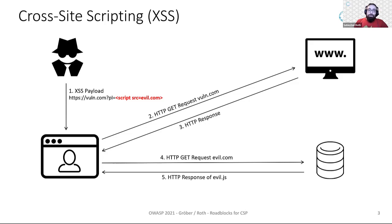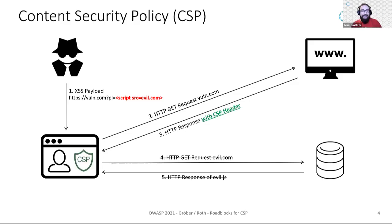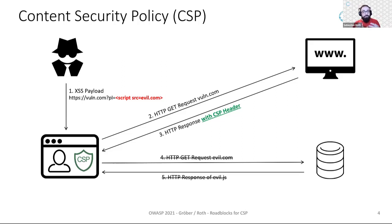That's where CSP kicks in to mitigate the effect of those markup injections. It basically acts as a last line of defense against those attacks. It is essentially a list of trusted JavaScript sources that are allowed to be loaded and executed by the browser. As soon as the server has a correct CSP header in the response, the evil script is not even requested by the victim's browser.